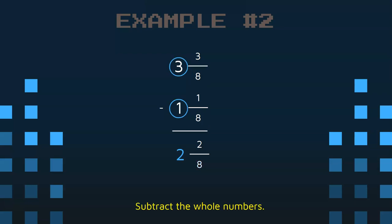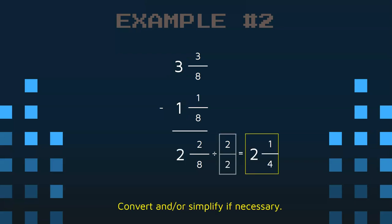And then we're going to subtract the whole numbers, which gives me 2 and 2 eighths. And we ask ourselves, can we convert? No, that's not an improper fraction. When we subtract, we're not going to get an improper fraction. But we might have to simplify, and 2 eighths can be simplified. So we're going to take the greatest common factor, which is 2, and we're going to divide 2 eighths by 2 halves. And that gives us 1 fourth. But we don't want to forget the whole number. So make sure you bring that whole number over and put it right next to your simplified fraction.